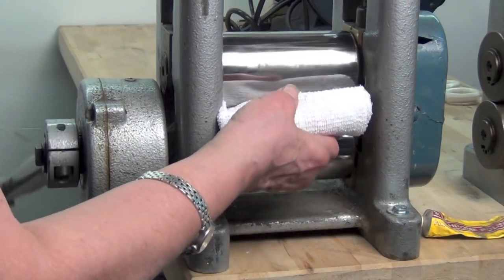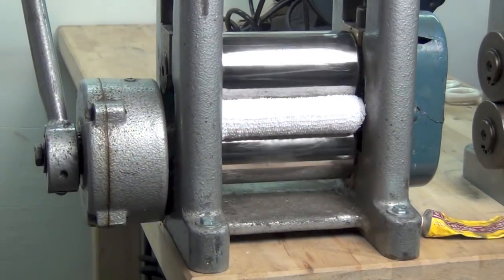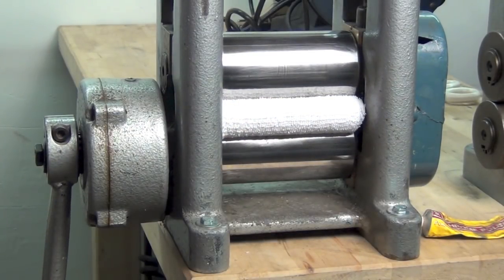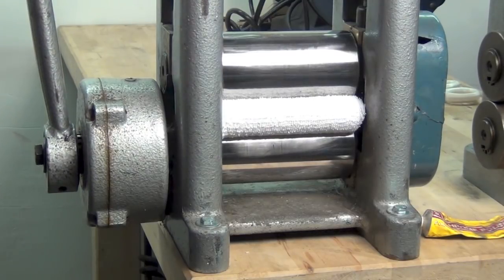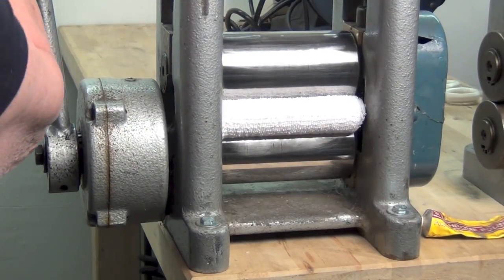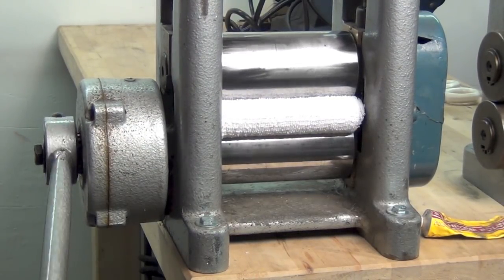I then feed the towel through the rollers and tighten it down. I want it snug as I roll the towel through the rolling mill.